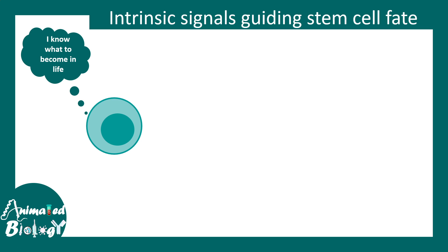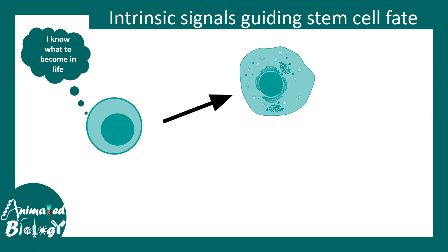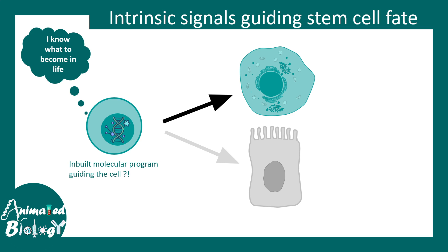There could also be intrinsic signals. Intrinsic signals tell a stem cell what to become in life — what its end fate would be. This is an alternative hypothesis: as if the stem cell knows what it has to do in life and doesn't need any external guidance. So obviously the stem cell knows it has to become one particular cell type and not another. There could be an internal molecular program or internal clock monitoring these effects. All these are hypotheses.